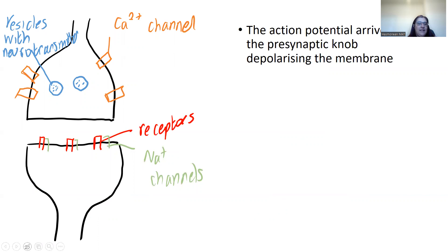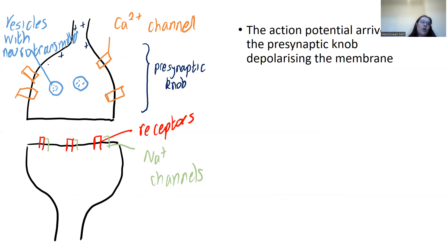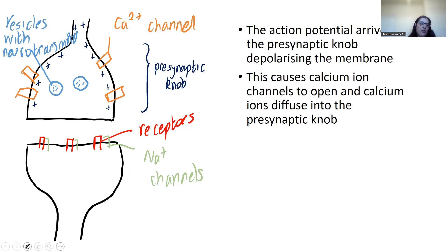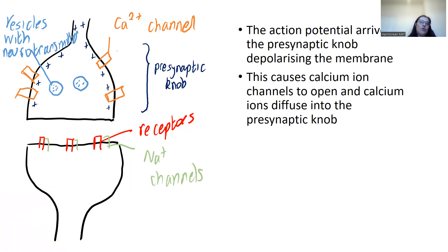The action potential arrives at our presynaptic knob — that labelled region there. The action potential, which is a depolarisation (positive), arrives at the presynaptic knob, having been transmitted along the myelinated neuron in those small circuits. This causes the calcium ion channels — shown as orange boxes — to open. Because they open, calcium ions can then diffuse through the channel via facilitated diffusion into the presynaptic knob.